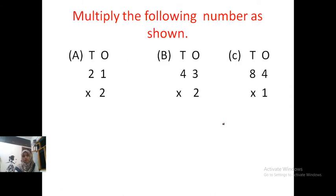Multiply the following number as shown. First of all, we multiply 1. 2 x 1 is 2. Write in 1's place. 2 x 2 is 4. 21 x 2 is equal to 42. So our answer is 42.